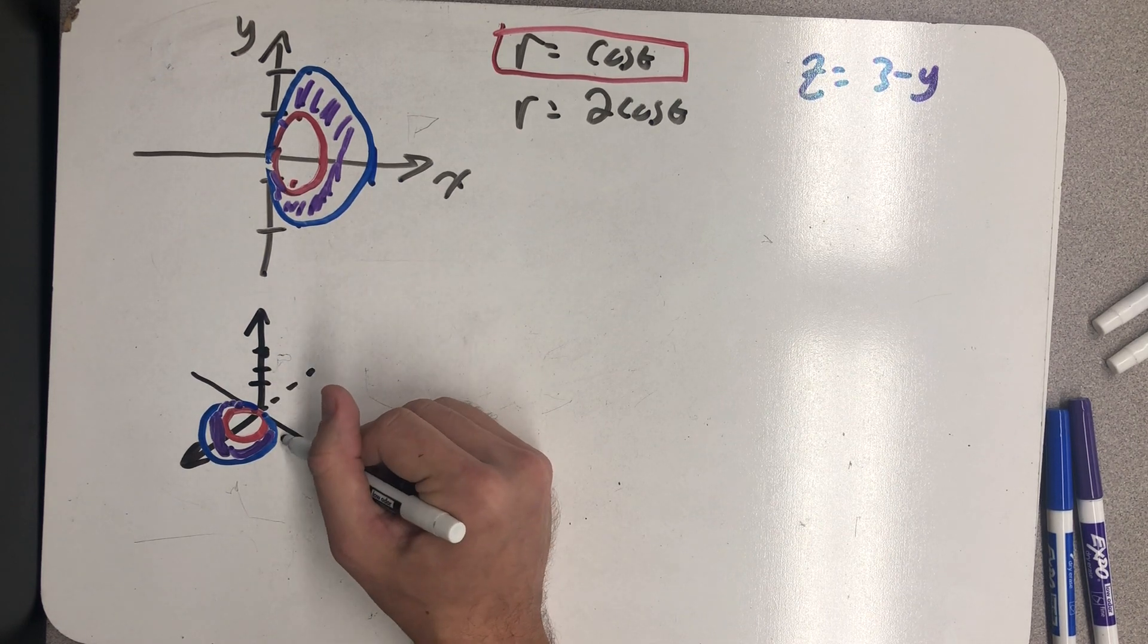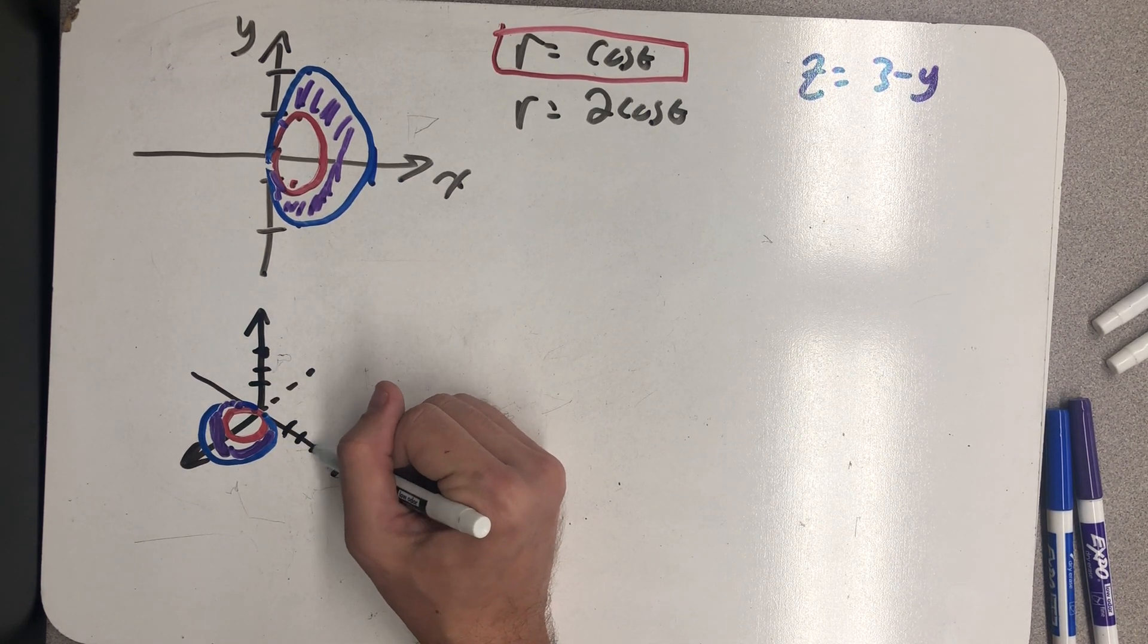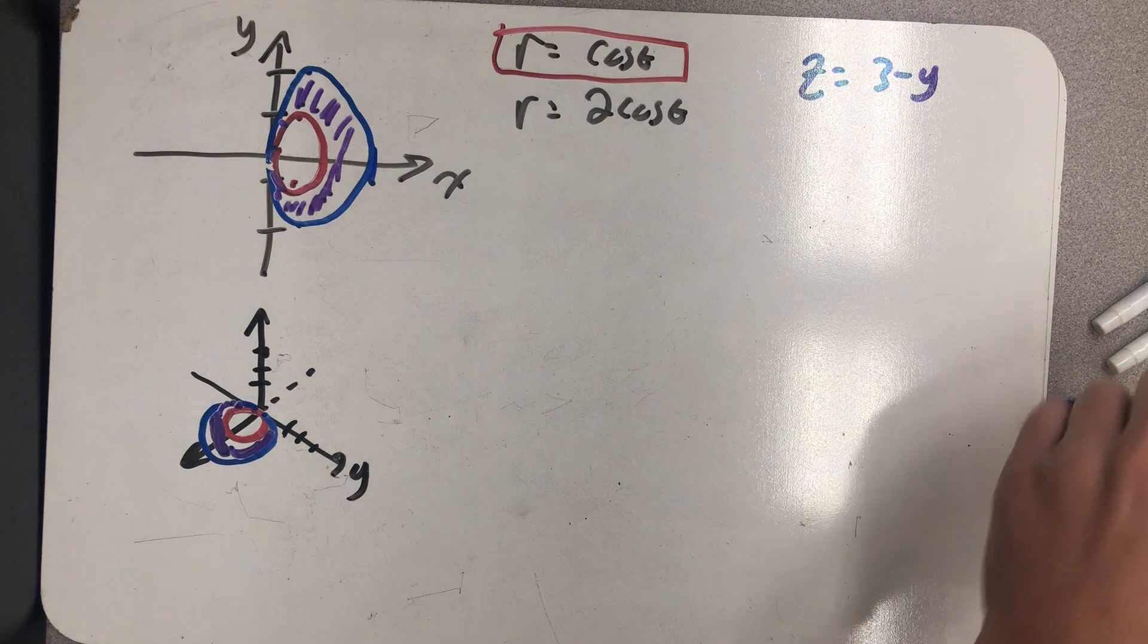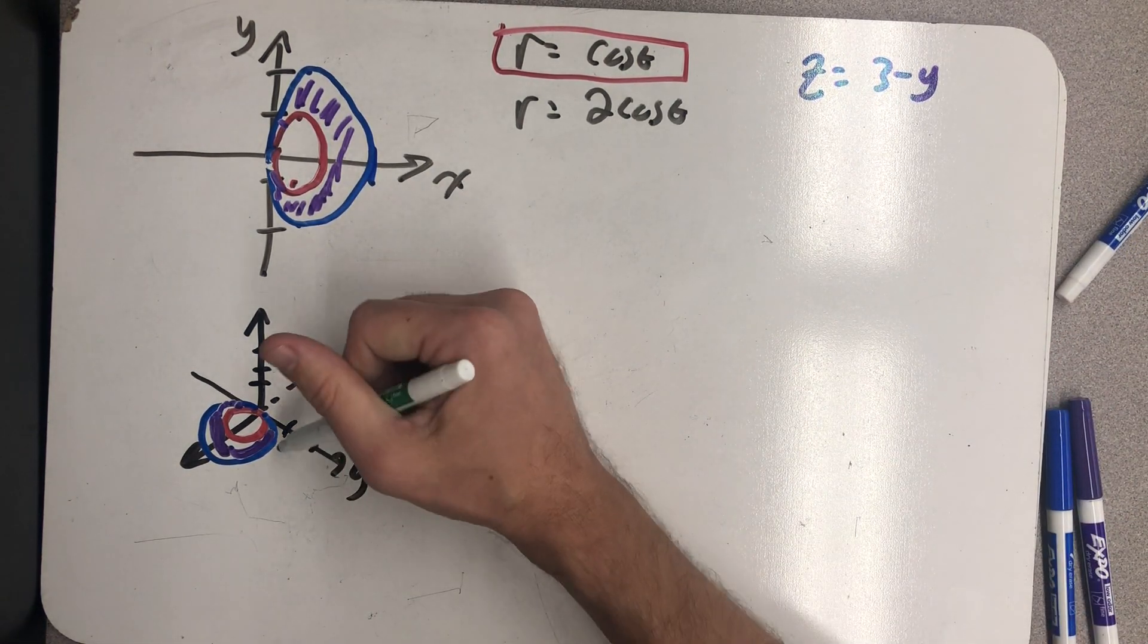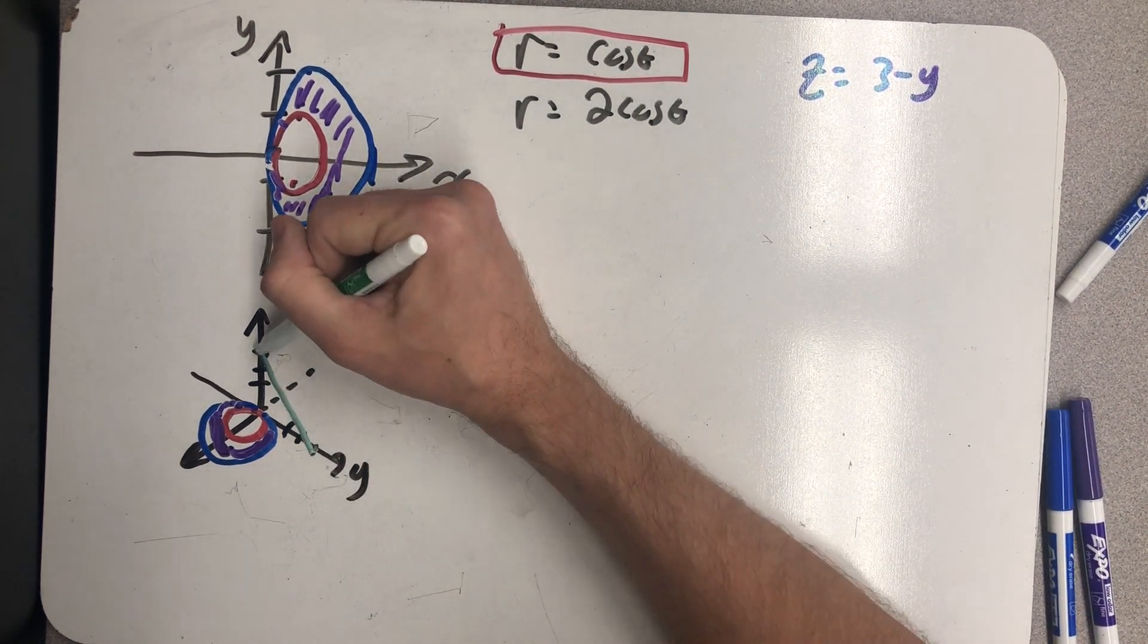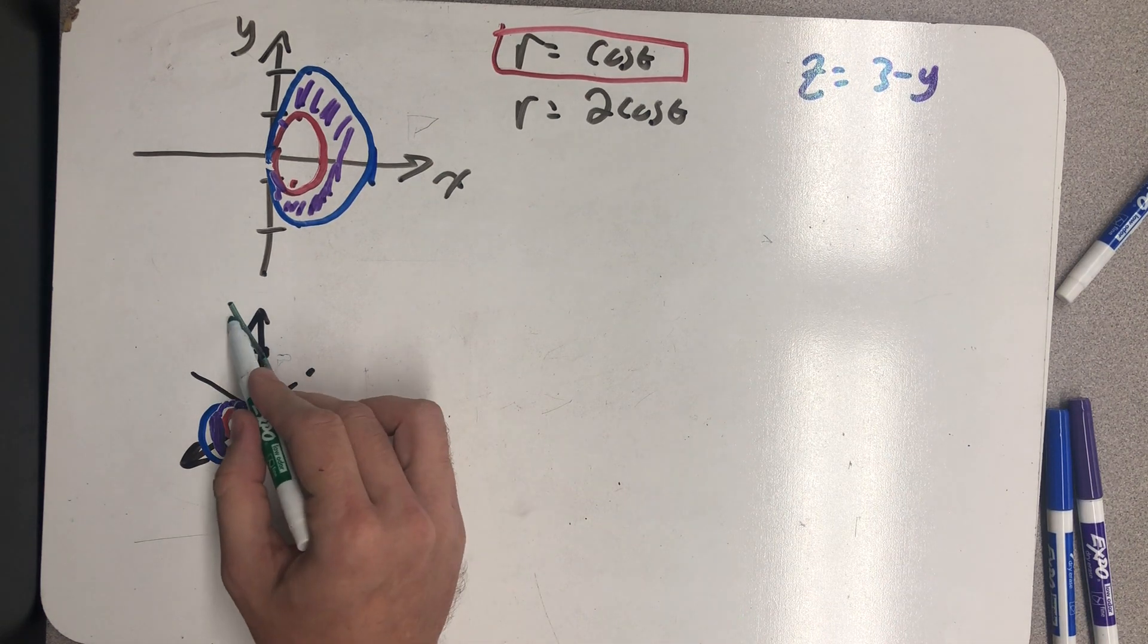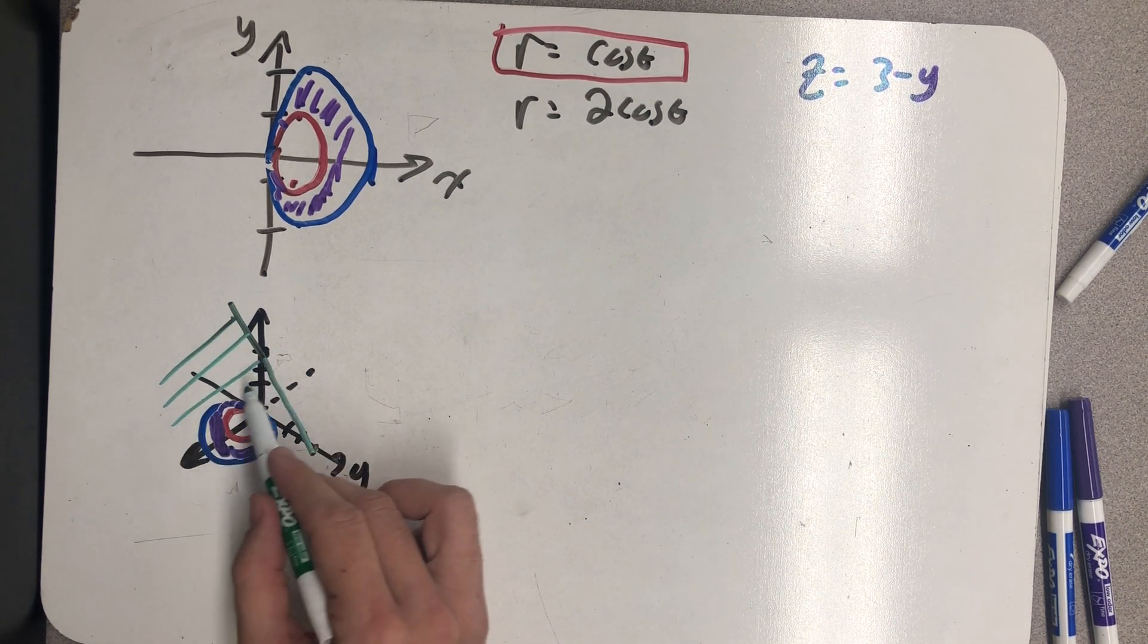The z-intercept would be at 3. Y-intercept is also at 3. So the plane I'm looking at reminds me a lot of that line.